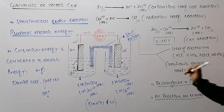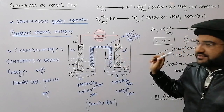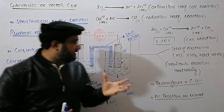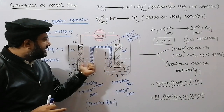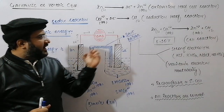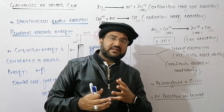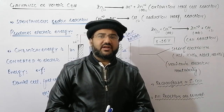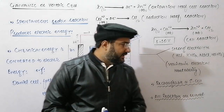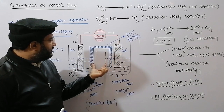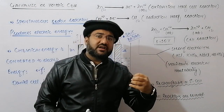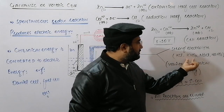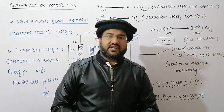A very important point is what is the function of the salt bridge? It is a bridge because it creates a connection between the two halves — the anodic cell and the cathodic cell. It is called a salt bridge because the tube or bridge contains a strong electrolyte, and that strong electrolyte is usually some salt, such as KCl, KNO₃, NaCl, or NaNO₃.